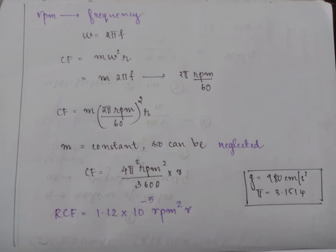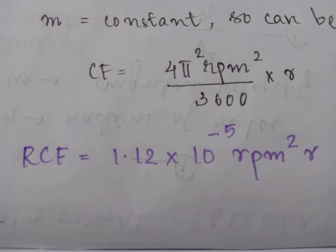Substituting the values as g equals 980 centimeter per second squared and pi as 3.1514, then you will get an answer that is RCF equal to 1.12 into 10 raised to minus 5 RPM squared into r.